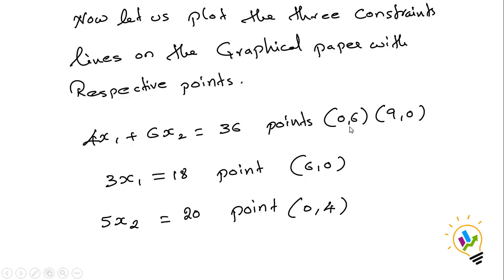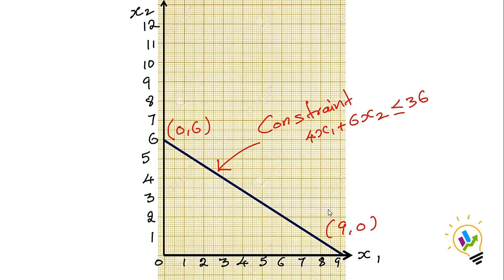For the first constraint we have two points: (0, 6) and (9, 0). For the second constraint we have (6, 0). For the third constraint it is (0, 4). On the graph paper, X1 is plotted on the X-axis and X2 on the Y-axis, divided into equal units of 1 through 8.